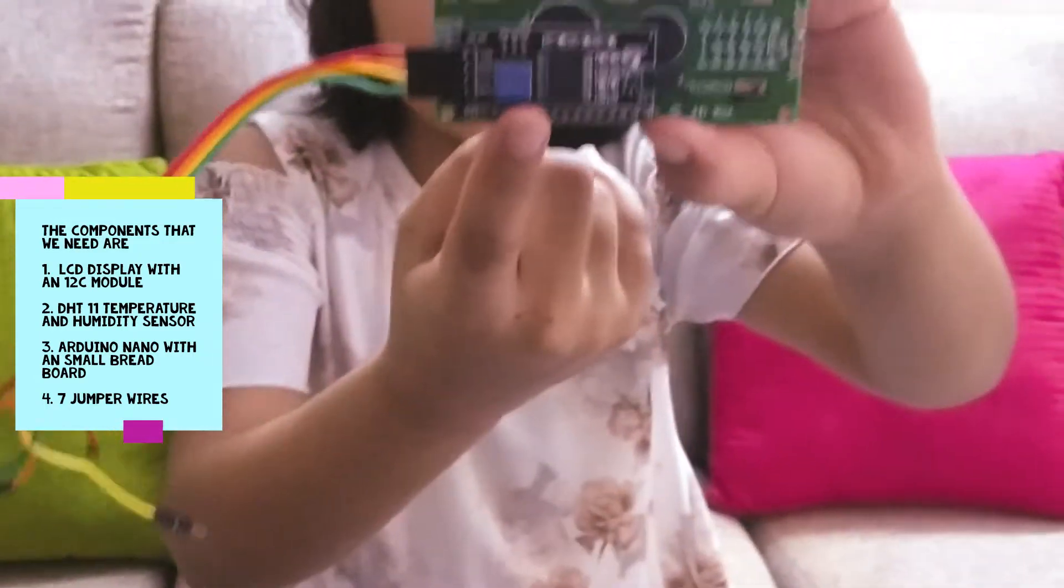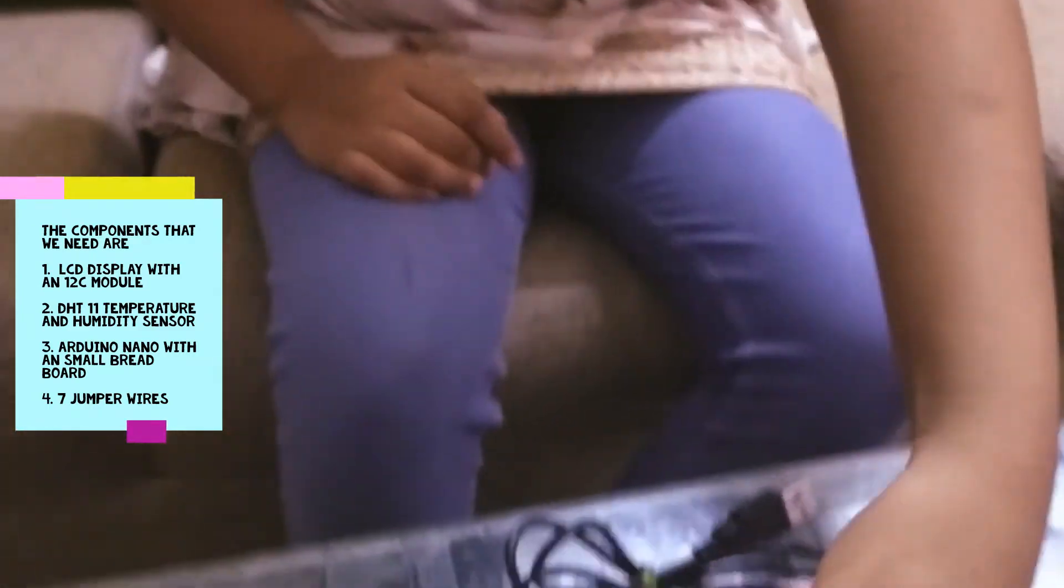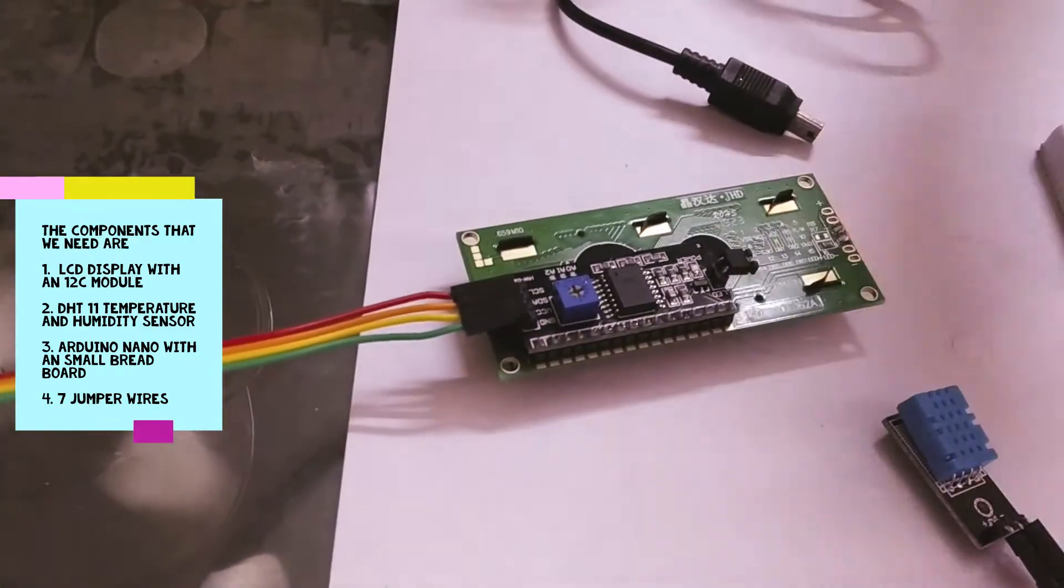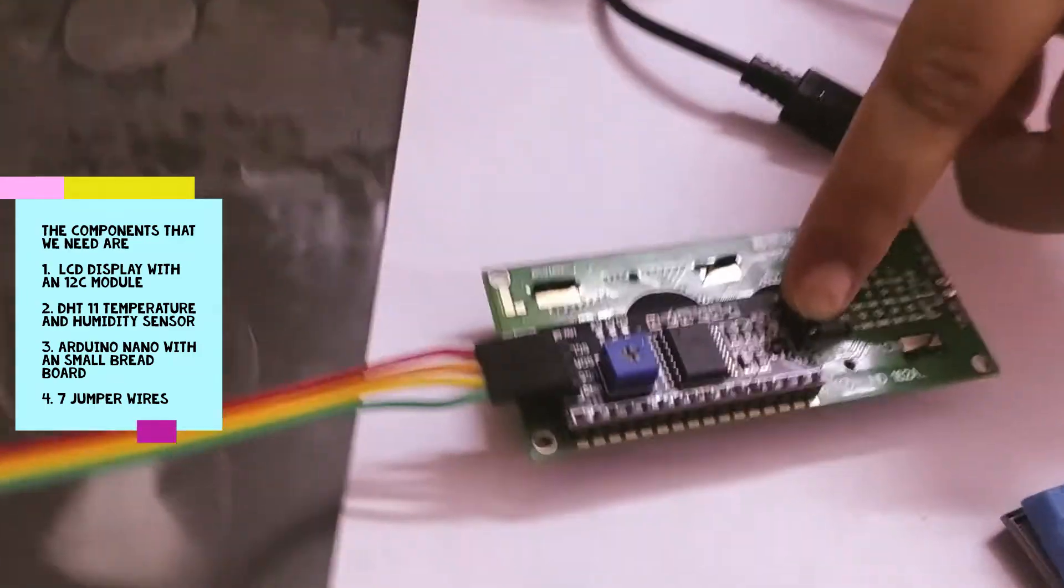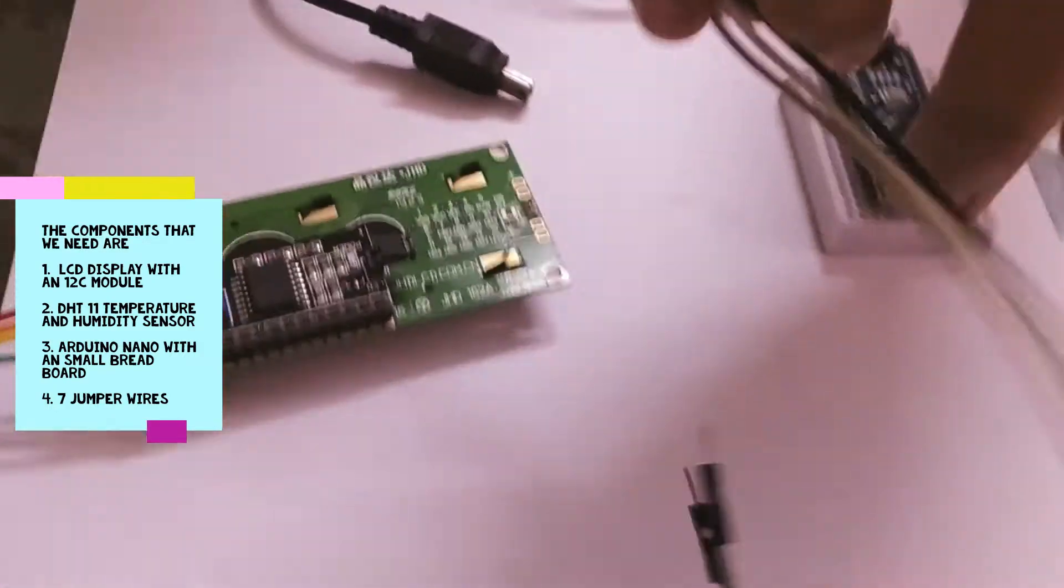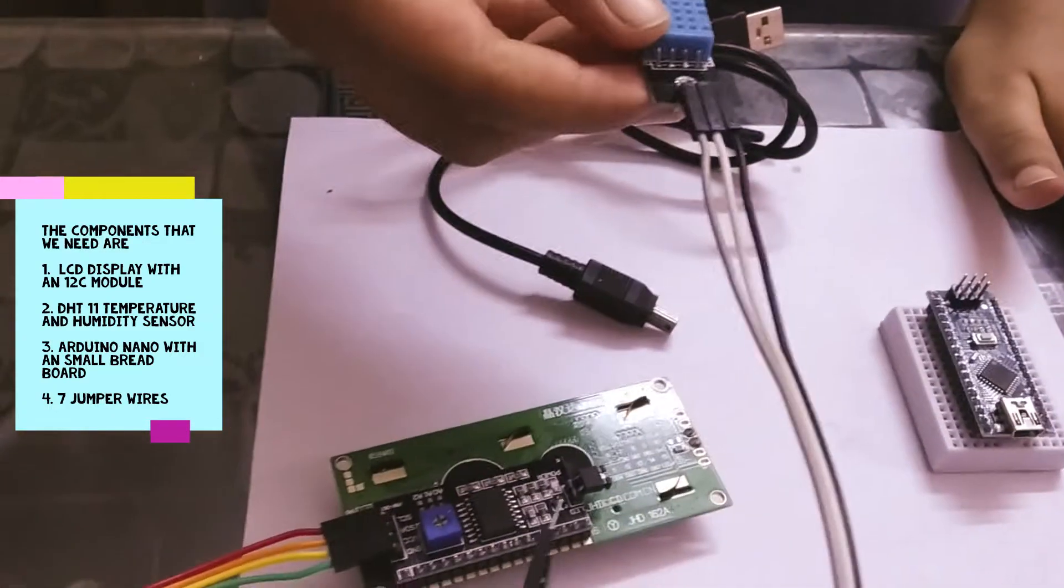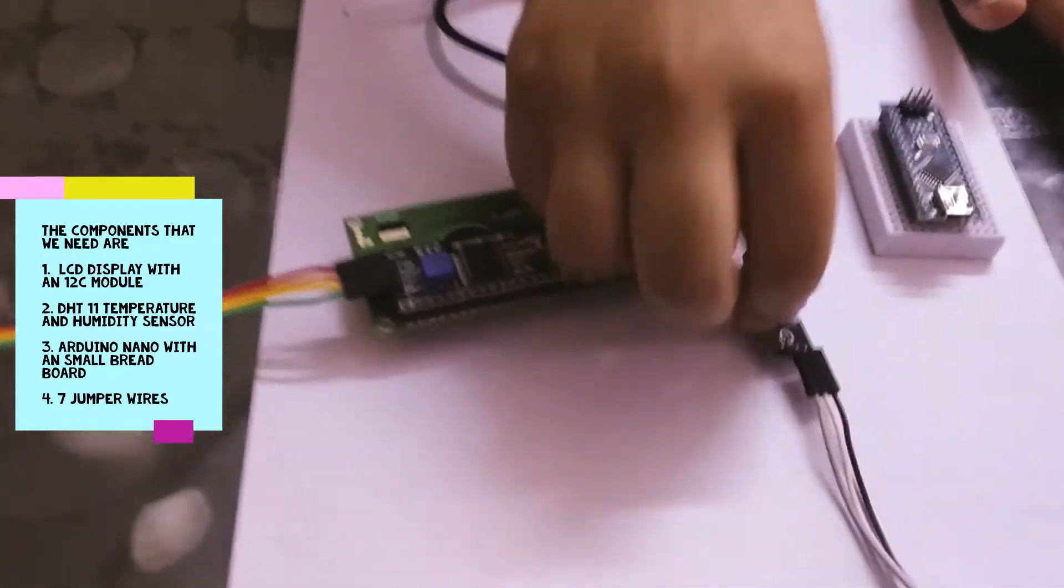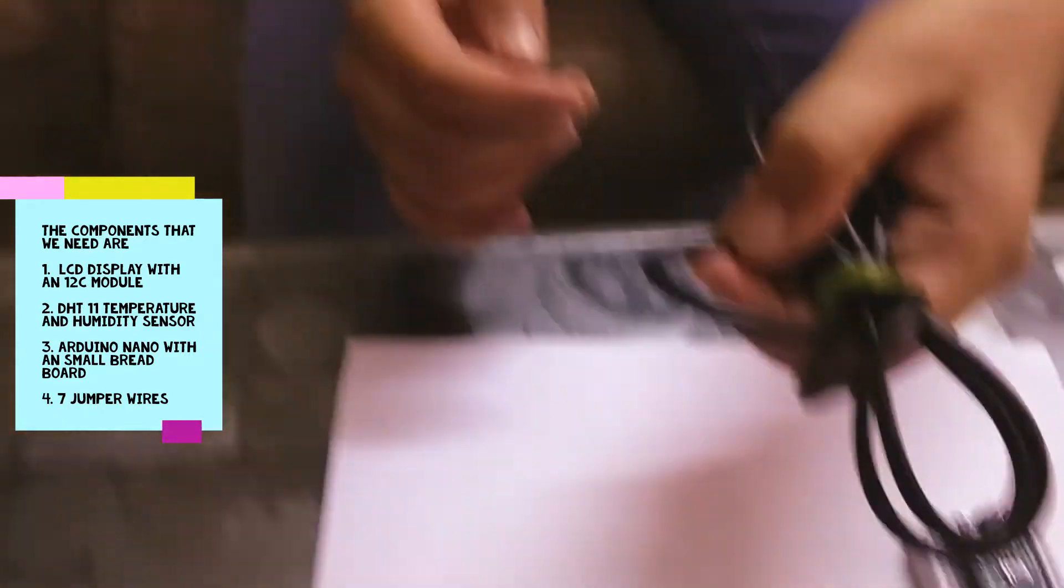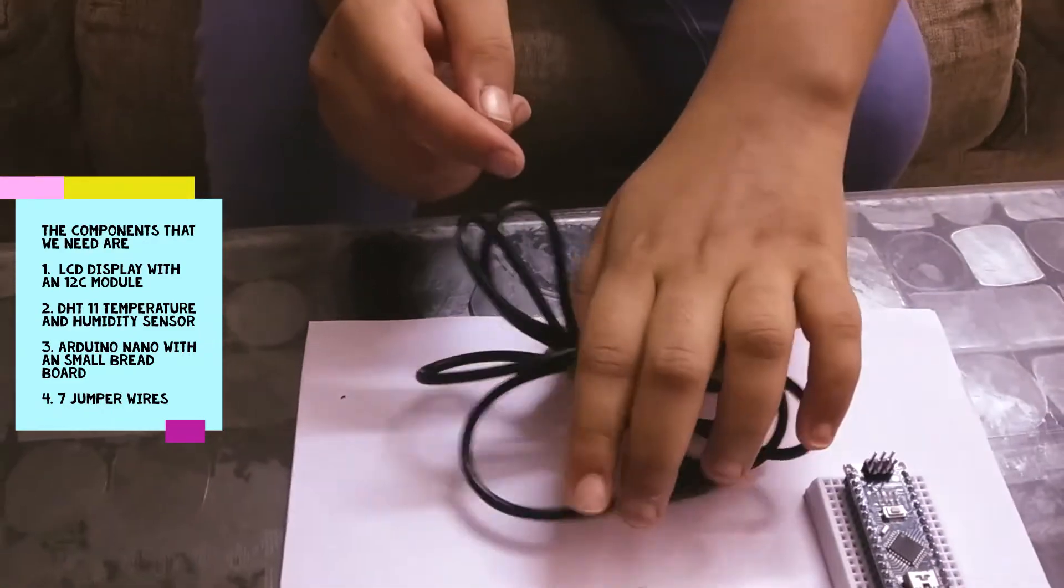I am using an I2C module as it takes only 4 pins to connect with the Arduino Nano. If we do not use the I2C module, it will take 13 to 14 pins to connect. Then we will be needing a DHT11 temperature and humidity sensor, an Arduino Nano, 7 jumper wires, and a wire to connect the Arduino Nano to the laptop.